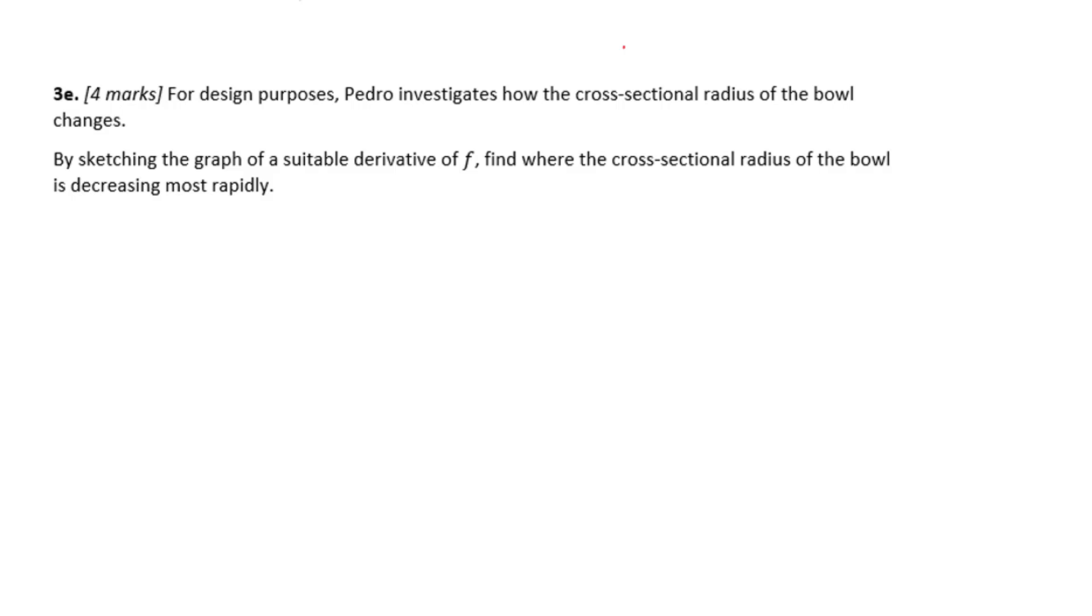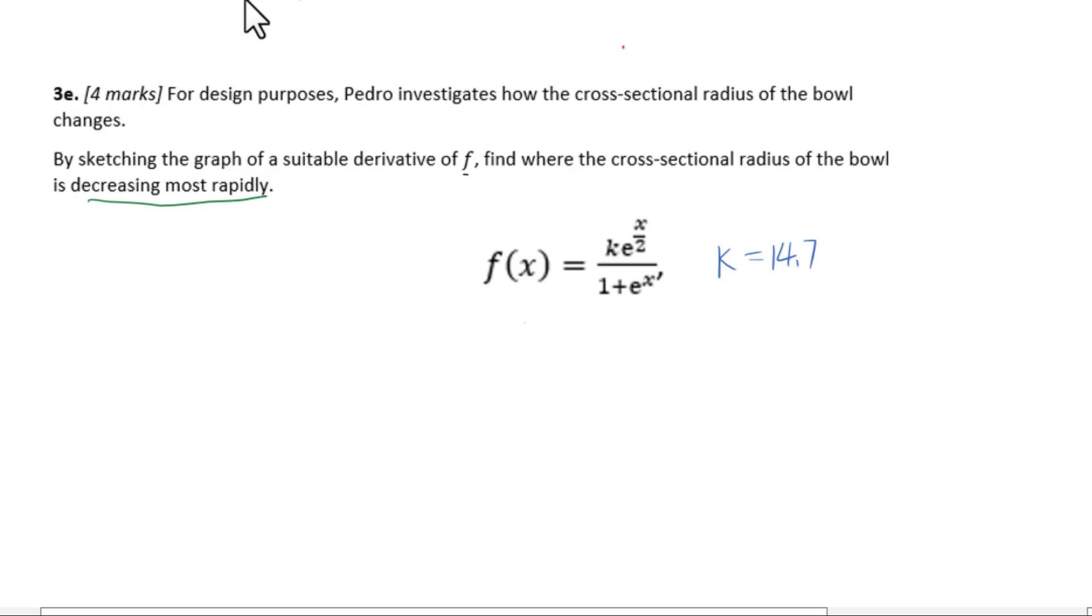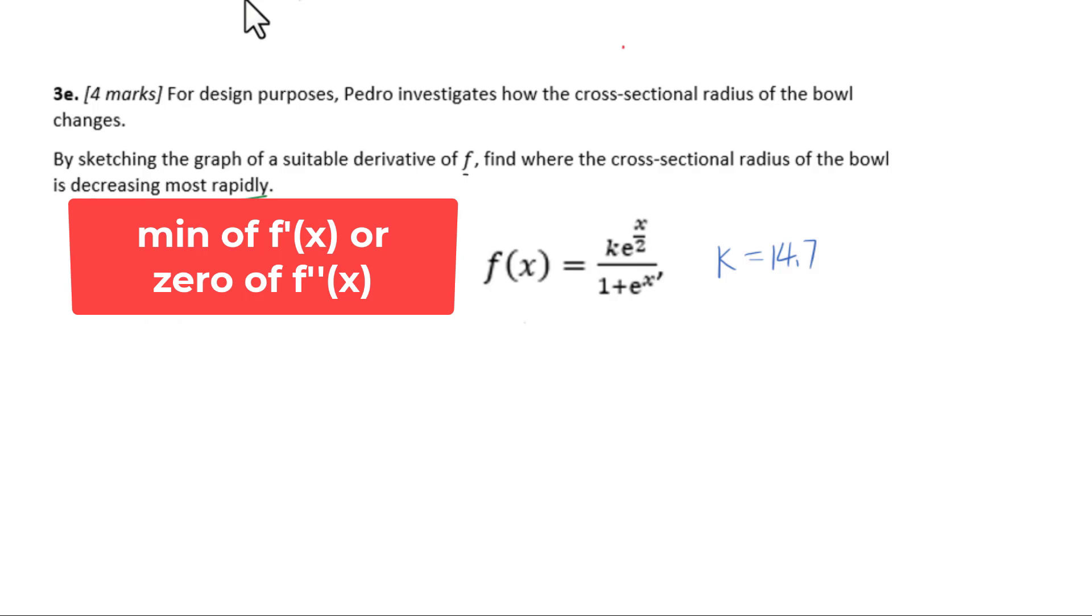Let's go to 3e. For design purposes, Pedro investigates how the cross-sectional radius of the bowl changes. By sketching the graph of a suitable derivative of f of x, find where the cross-sectional radius of the bowl is decreasing most rapidly. Decreasing most rapidly means the minimum of f prime of x or zero of f double prime of x. We need to sketch the graph of a suitable derivative of f.